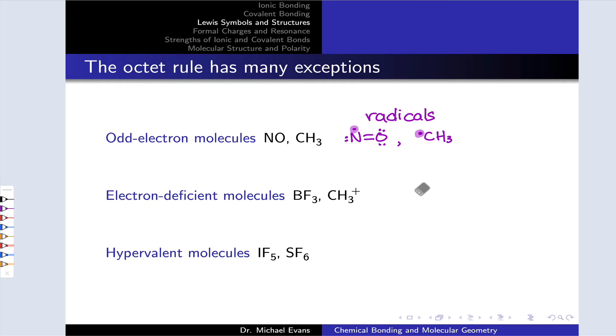The second class here are electron deficient molecules. These are molecules with still an even number of electrons total around each atom, but a number less than eight, typically six. For example, in BF3 and in the CH3 plus cation, there are six total electrons around the central atom.